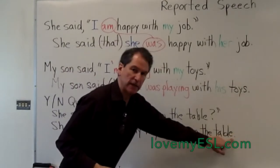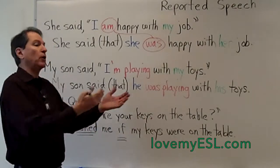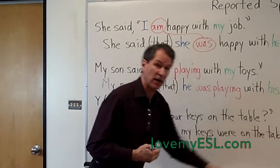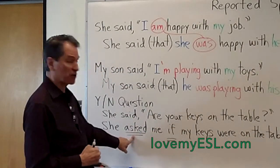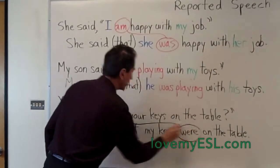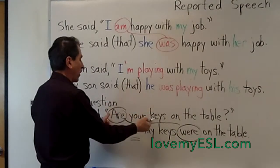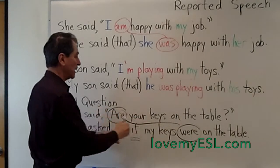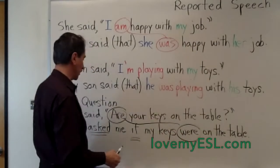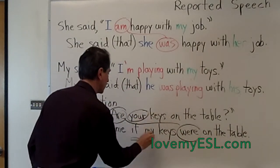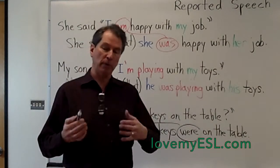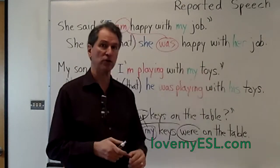Notice no question mark is at the end, because this is not a question. I'm telling you what her question was to me — I'm not asking you a question, I'm reporting what she said. The reported speech is not a question, so don't put a question mark. She asked me — that tells you it was a question. Let's look at the changes: 'are' became 'were,' present tense to past tense. Also, 'are' was before 'your keys' — that was an inversion because it was a question. Here, 'my keys were' — the subject is before the verb because this is no longer a question. 'Are' changed to 'were,' 'your' changed to 'my.' For yes/no questions: use 'if,' no inversion, no question mark at the end.